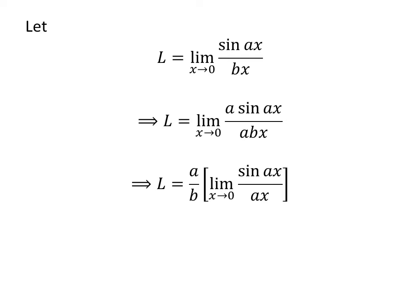As a upon b is a constant, we can write the above expression as L is equal to a upon b times limit of sin of a times x upon a times x as x approaches 0.